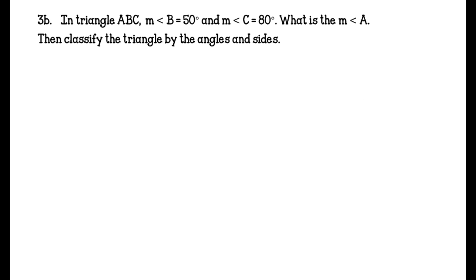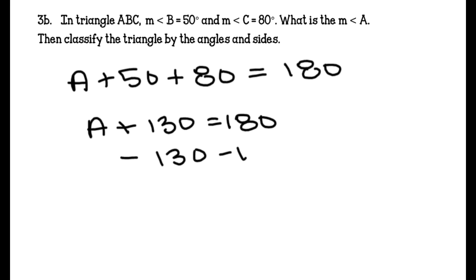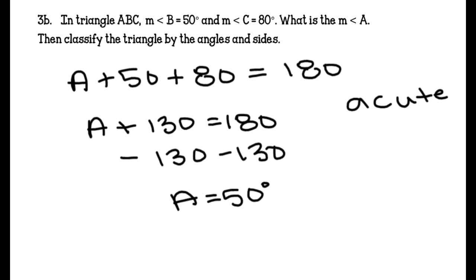3B: In triangle ABC, the measure of angle B equals 50 and the measure of angle C equals 80. What is the measure of angle A? So A plus 50 plus 80 equals 180. I get A plus 130 equals 180. Subtracting 130 from both sides, A equals 50 degrees. Classifying by angles and sides: I have 50, 80, and 50 — all acute angles, so it's an acute triangle. And two angles are the same, so that makes it isosceles. So this is an acute isosceles triangle.